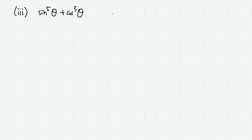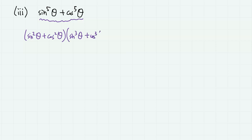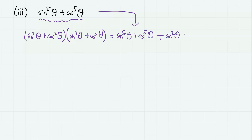Finally, the power of 5 — perhaps the trickiest one among these three problems, but not a problem at all if you know the trick. Note that sine to the power of 5 theta plus cosine to the power of 5 theta appears in the expansion of sine square theta plus cosine square theta, times sine cube theta plus cosine cube theta. If we expand this, we have sine to the 5 plus cosine to the 5, plus sine square theta cosine cube theta plus sine cube theta cosine square theta.